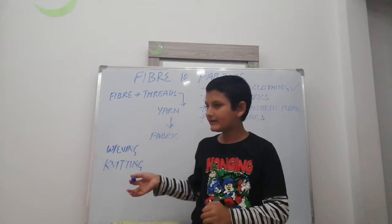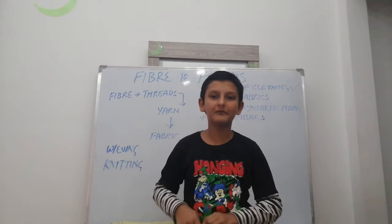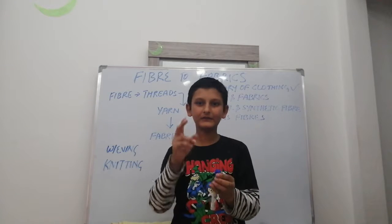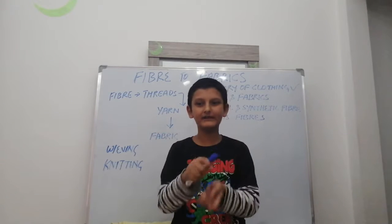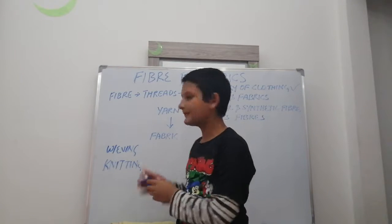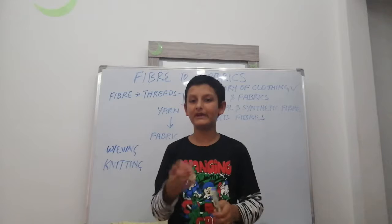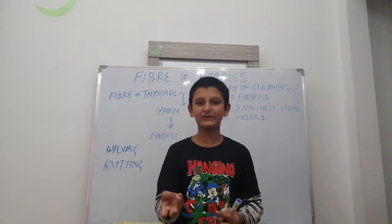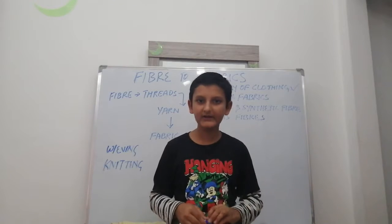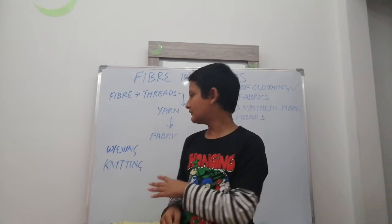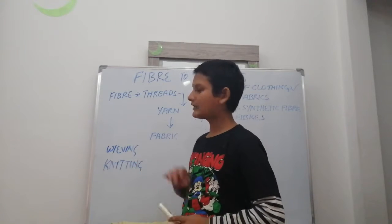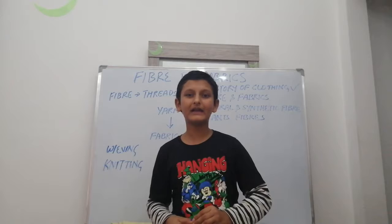Weaving involves taking two yarns and twisting them together to form fabric. It can be hand operated or machine operated. The machine used for weaving is known as a loom. Remember that — the machine used for weaving is called a loom.